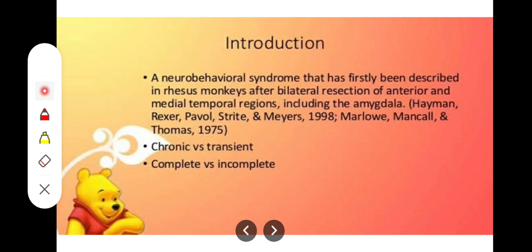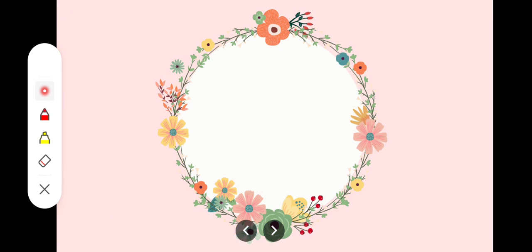There is a disease called Klüver-Bucy syndrome. Experiments on monkeys showed that when the amygdala was removed, there was immense aggression, increased sexual drive, abnormal eating behaviors, and emotional instability. This is because the limbic system — particularly the amygdala — has an inhibitory effect on these behaviors. Without it, these inhibitory effects are lost, resulting in the symptoms of Klüver-Bucy syndrome. That is all about the limbic system.